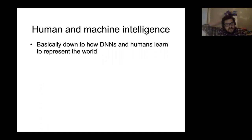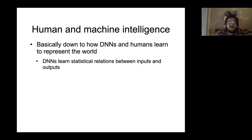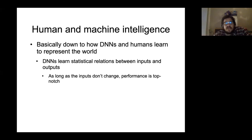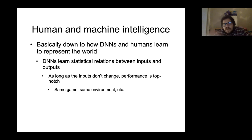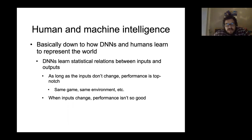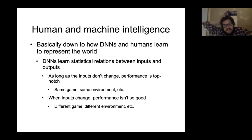One question you could ask is why, and my colleagues and I have basically put that down to how deep neural networks and humans learn to represent the world. What DNNs learn is statistical relations between inputs and outputs — say, between game screens and particular moves — and as long as inputs don't change and the environment doesn't change, performance is going to remain top-notch. But if you change the input at all, performance is going to fall off a cliff.